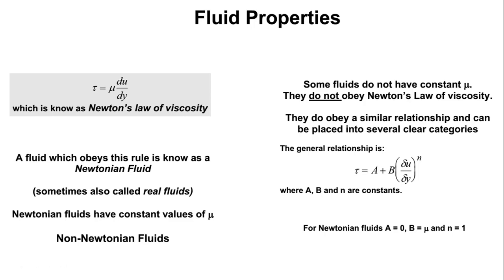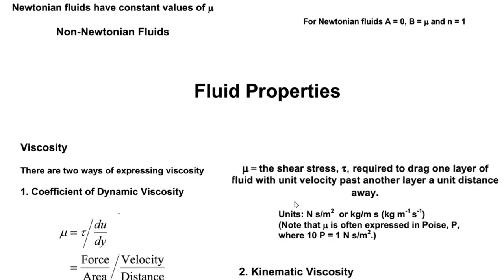A Newtonian fluid obeys tau = mu × du/dy. There are some fluids that do not obey Newton's law of viscosity, and for these we have a general equation: tau = A + B × (du/dy)^n, where A and B are constants and n is the power. This general formula covers fluids not obeying Newton's law. If we set A = 0, B = mu, and n = 1, it reduces back to Newton's law of viscosity.